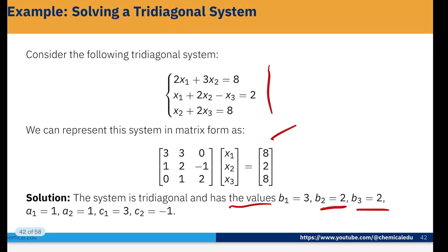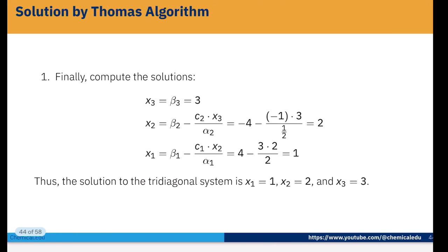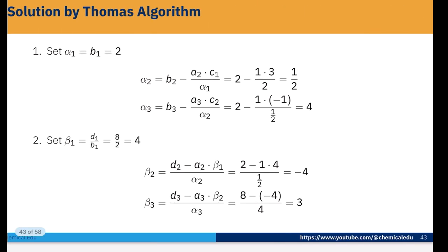Now we apply the Thomas algorithm. Set alpha_1 = b1 = 2. Alpha_2 = b2 minus (a2 × c1) / alpha_1 = 2 minus (1 × 3) / 2 = 1/2. Alpha_3 = b3 minus (a3 × c2) / alpha_2, which gives alpha_3 = 4. Then beta_1 = d1 / b1 = 8 / 2 = 4. Beta_2 = (d2 minus a2 × beta_1) / alpha_2, giving beta_2 = -4. Beta_3 = (d3 minus a3 × beta_2) / alpha_3 = (8 minus (-4)) / 4 = 3.